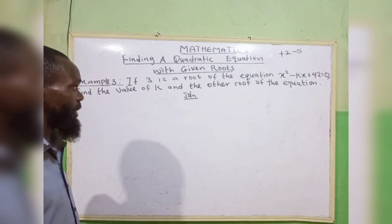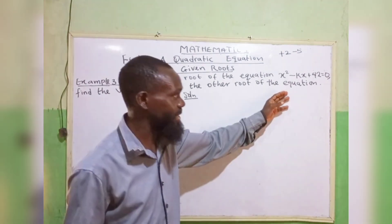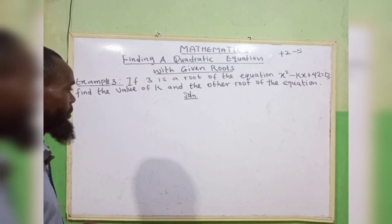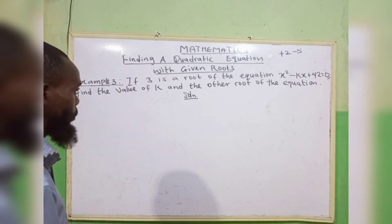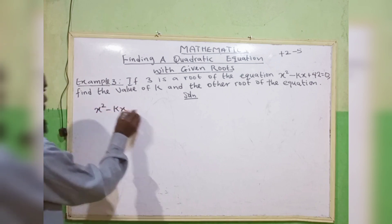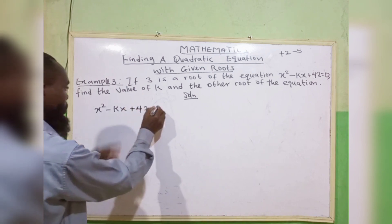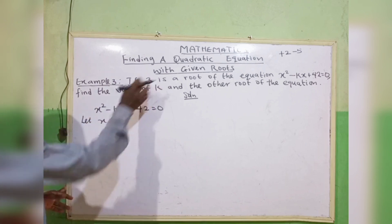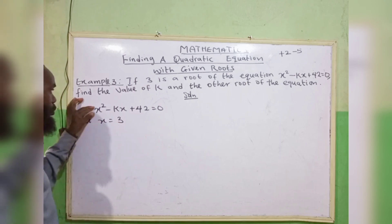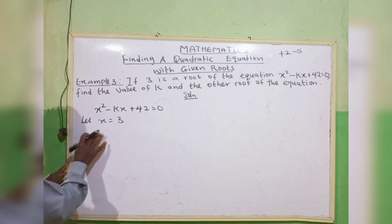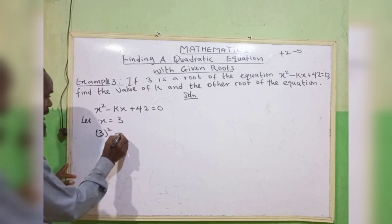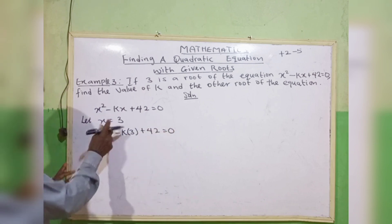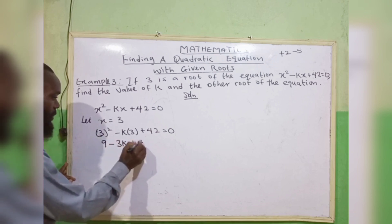Example 3: if 3 is a root of the equation x squared minus kx plus 42 equals 0, find the value of k and the other root. Since 3 is a root, let x equal 3 and substitute: 3 squared minus k times 3 plus 42 equals 0. That gives 9 minus 3k plus 42 equals 0.